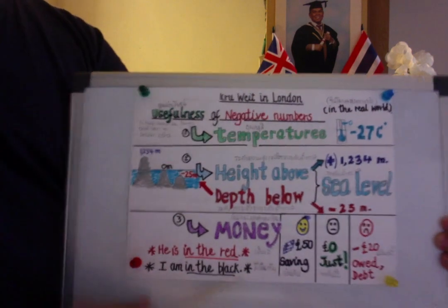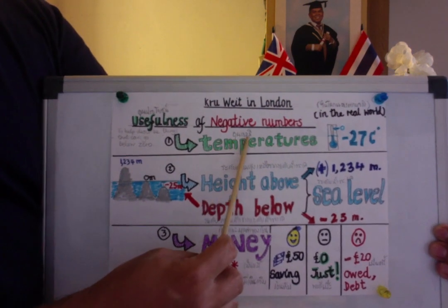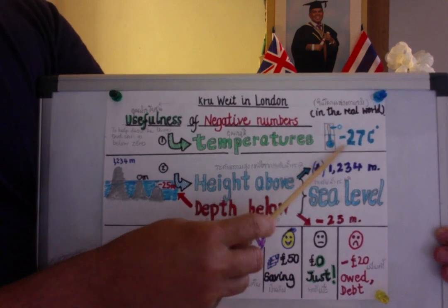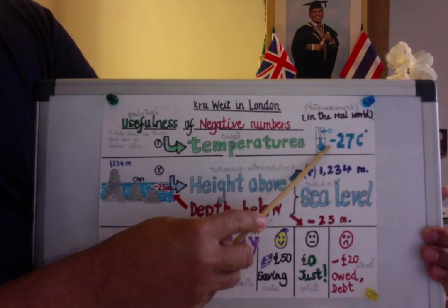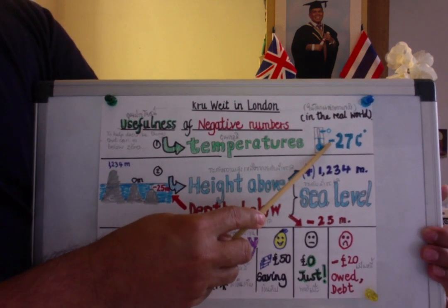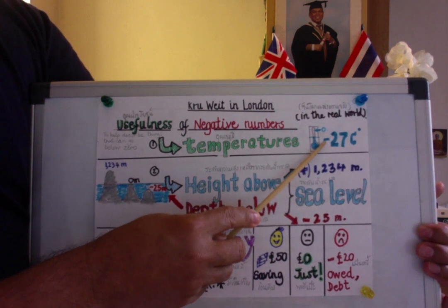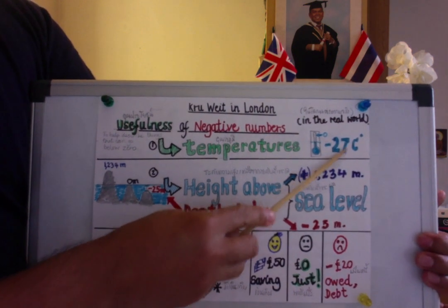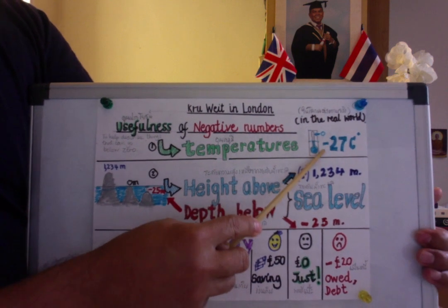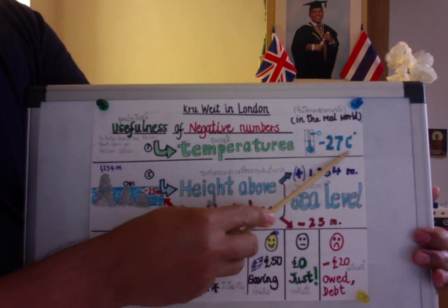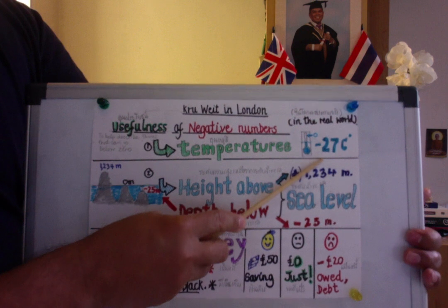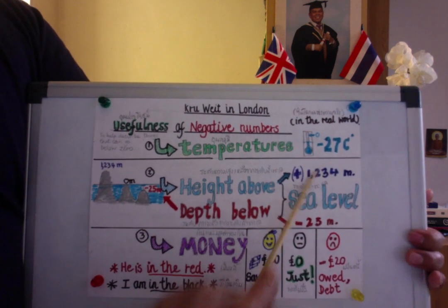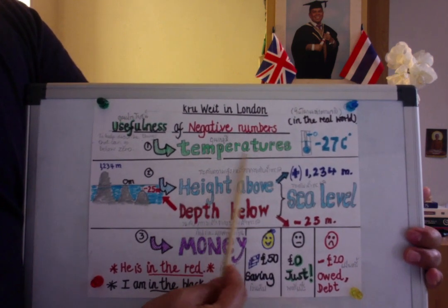When we talk about temperatures, let's say this is zero. In a country like Canada, the temperature could sometimes go down to minus 40. But I just put an example here: minus or negative 27 degrees Celsius. That is a temperature below 0. We find negative numbers when we talk about temperatures.